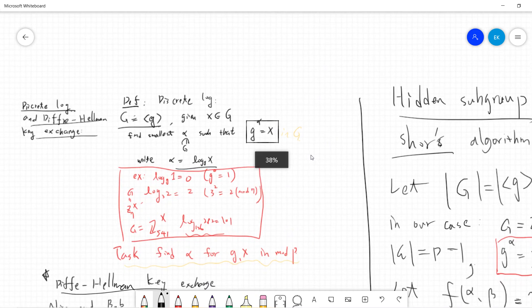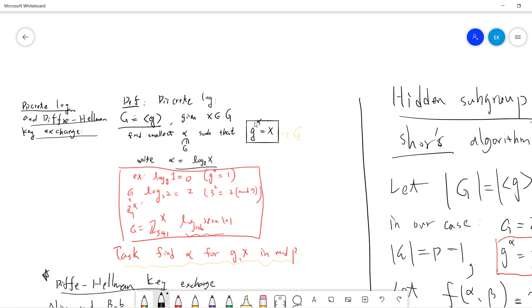The discrete log is basically somebody gives you g and x and you need to solve for alpha in some secret group. So I give you g and x in some secret group capital G and your idea is to find alpha. One can write alpha as log_g x.